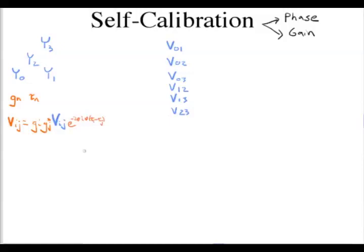One hallmark of phase self-calibration is that because you're always differencing two parameters, you're insensitive to adding some value to both parameters — whatever you add to one gets subtracted off with the other. In practice, there's an overall additive offset to all parameters that you're completely insensitive to, which means you can choose one phase parameter to be zero — we'll set tau_0 to zero.